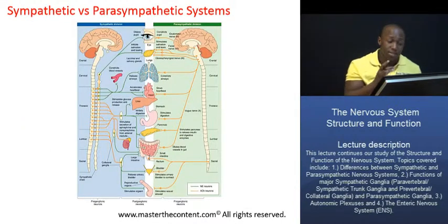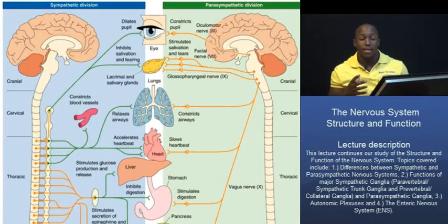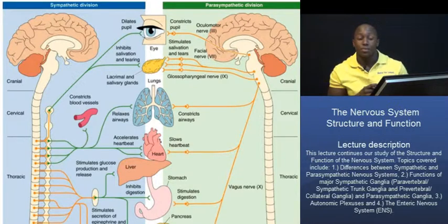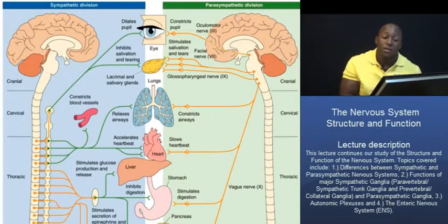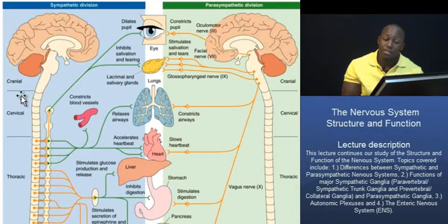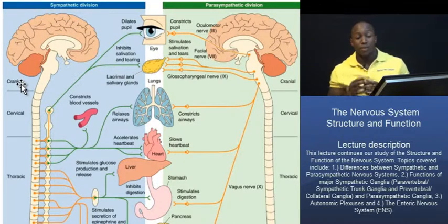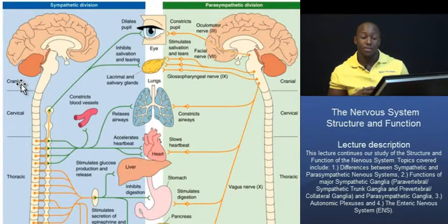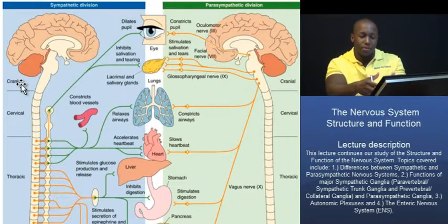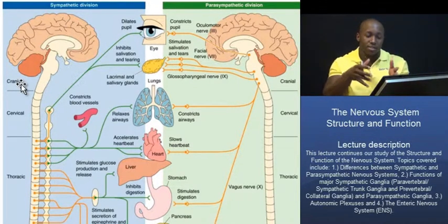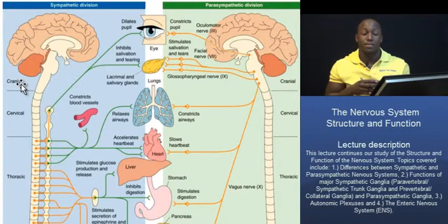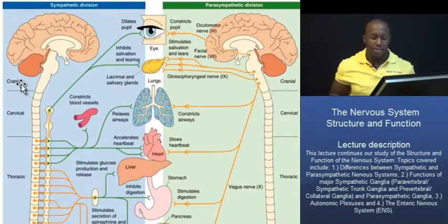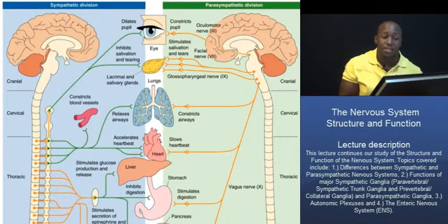What I want to do next is use a diagram to highlight some of the key differences in the responses mediated by these two divisions. On the left of the screen is the sympathetic division and the responses it mediates. On the right in green are the responses mediated by the parasympathetic division. We're going to go right down the middle and look at how these responses relate to one another — their antagonistic nature.